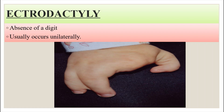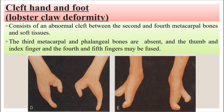Ectrodactyly is the absence of a digit — for example, the index finger may be missing. The lobster claw deformity consists of an abnormal cleft between the second and fourth metacarpal bones, where the third metacarpal and third phalangeal bones are absent. The thumb and index finger are fused, and the ring finger and little finger are also fused, giving a fork-like appearance.